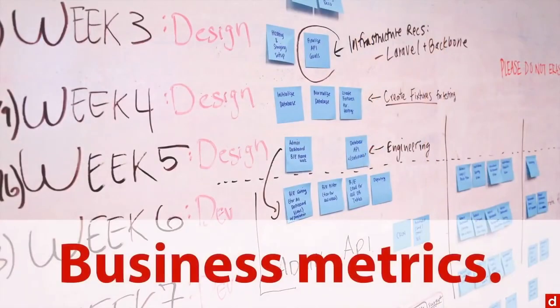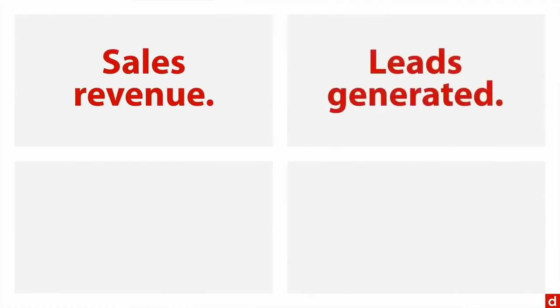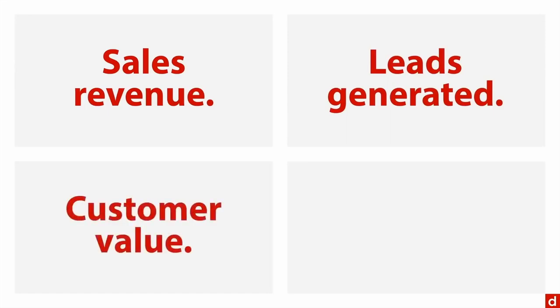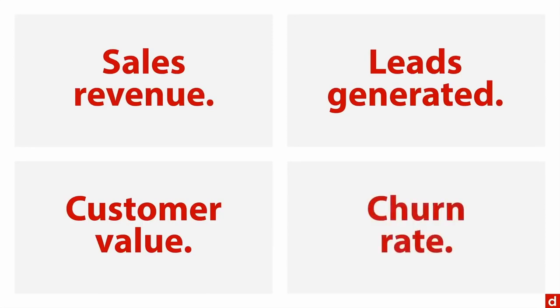First, let's talk about business metrics. If you're in the commercial world, there are some common ways of measuring success. A very obvious one is sales revenue — are you making more money, moving the merchandise, getting sales? There's also leads generated, new customers or potential customers, because that's associated with future sales. There's customer value or lifetime customer value, which you can use to predict overall profitability. And then there's churn rate, which has to do with losing and gaining new customers and having a lot of turnover. Any of these are potential metrics.